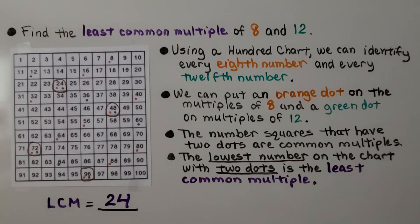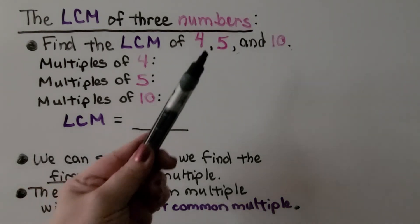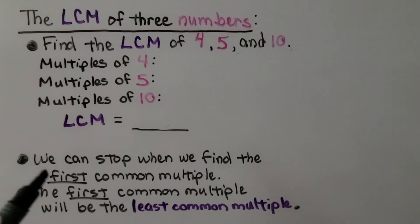We used a 100 chart and two different colors to help us. And we can find the LCM of three numbers. We need to find the LCM of 4, 5, and 10. We can stop when we find the first common multiple.